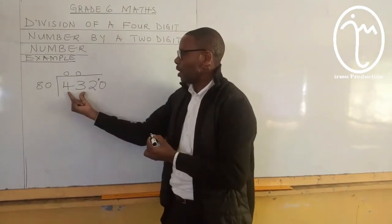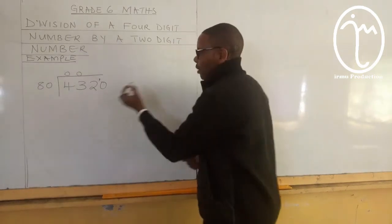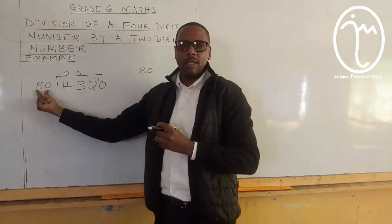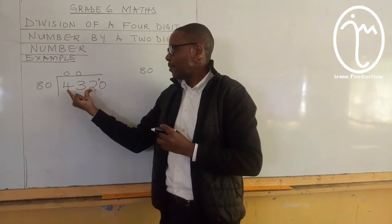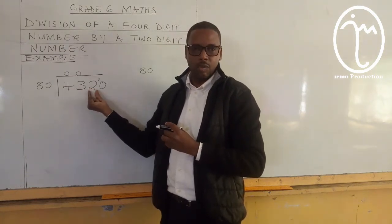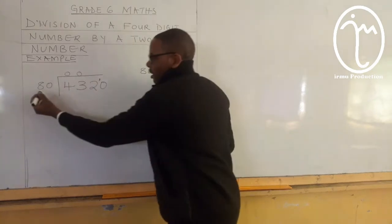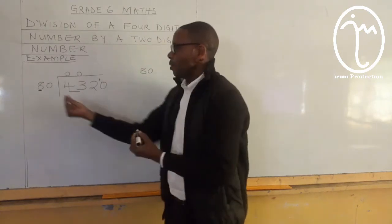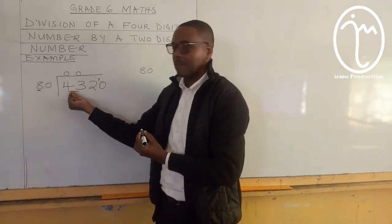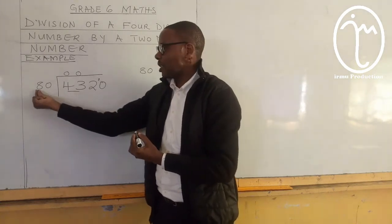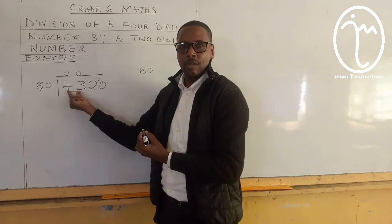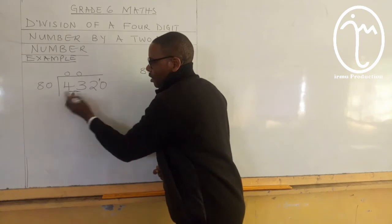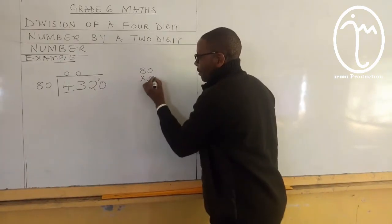Then you put a comma there — it can go into 432. So, the first method is where you take this divisor and check the number you multiply by 80 to get the nearest to 432. For a quick one, you just take this digit here — the first digit, 8, the tens — and then you look at these first two digits here. We know 8 times 5 gives 40, so the first number we are going to test is 5.